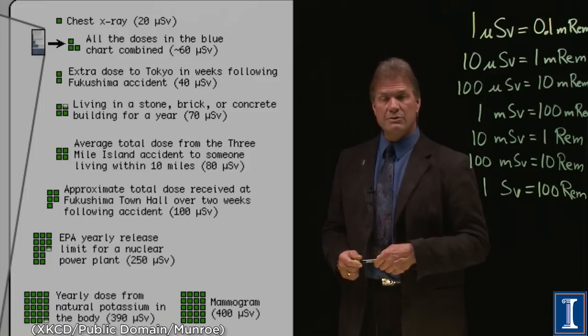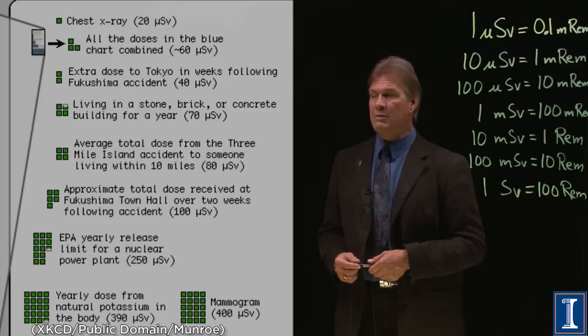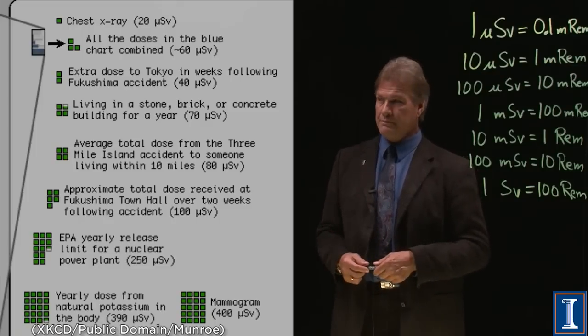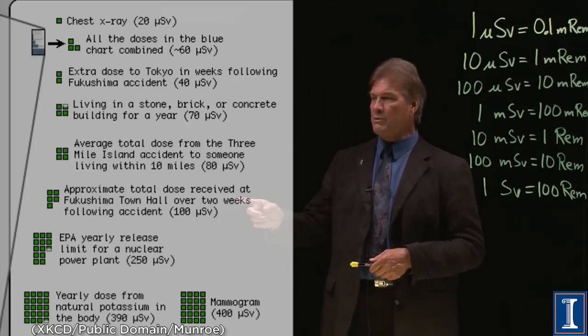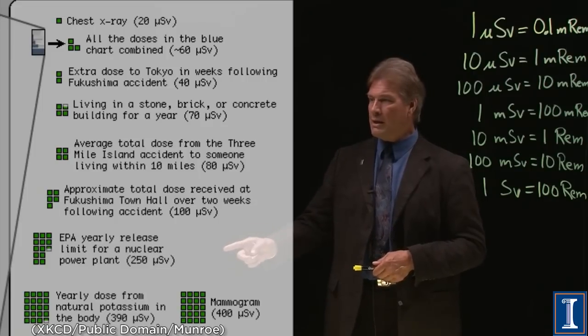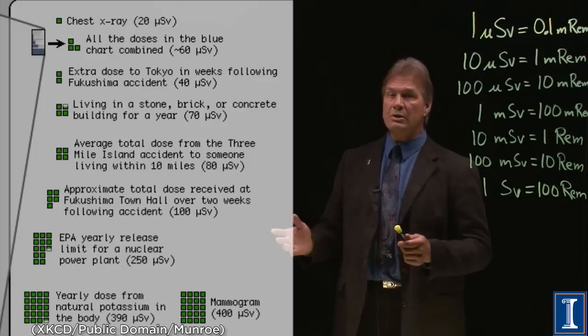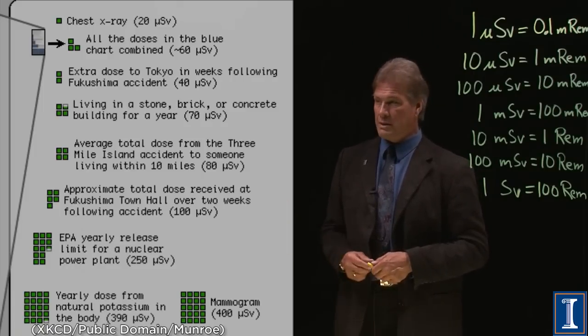Three Mile Island, the worst nuclear accident in the US. Tiny amounts of dose within 10 miles, eight millirem. We keep going down here. We get the amount that you might have been in the Fukushima Town Hall. And here is the amount that EPA says you could get from a nuclear reactor. Of course, you do get much, much less than that.